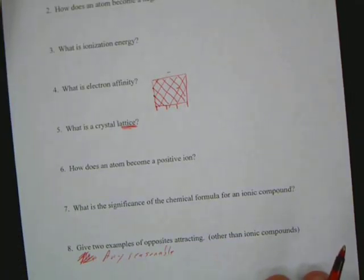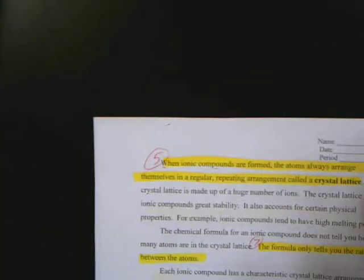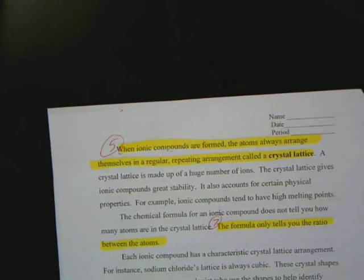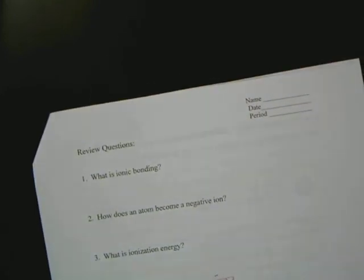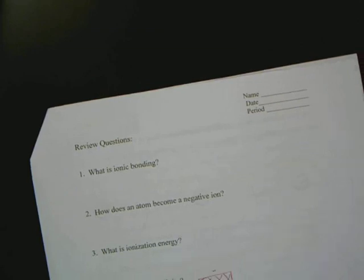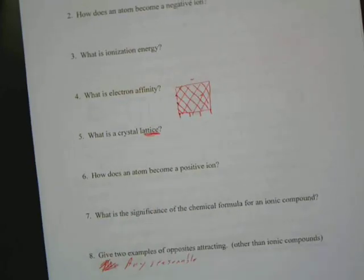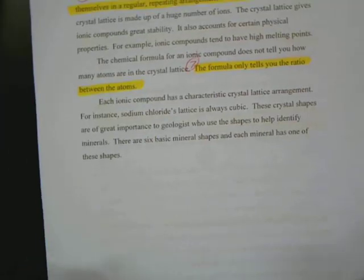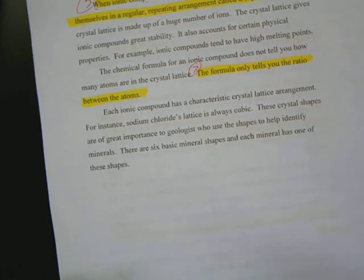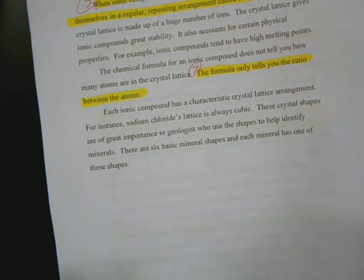Number five, what is a crystal lattice? When ionic compounds are formed, the atoms always arrange themselves in regular repeating arrangement called a crystal lattice. Number seven, what is the significance of the chemical formula for an ionic compound? Just like the other one, the formula tells you the ratio between the atoms, like the H2O and all that kind of stuff.